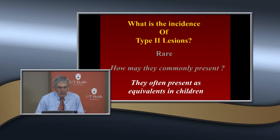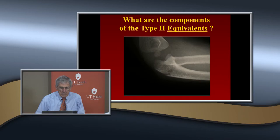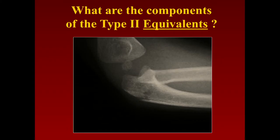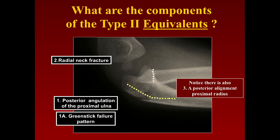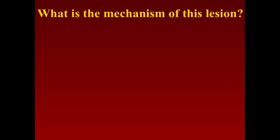Beto talked about things that were like Monteggia types but had other types of fractures associated. The type 2 equivalents include posterior angulation as a green stick fracture at the diaphyseal-metaphyseal junction. The other equivalent is a radial neck fracture — a lot of times they'll have a radial neck fracture. So the radial head is still reduced, but the overall alignment of the distal ulna is posterior.